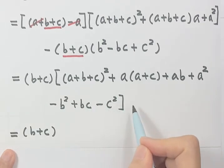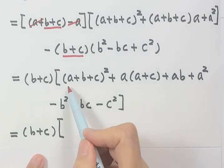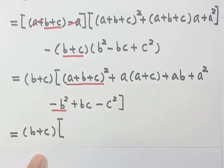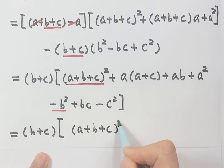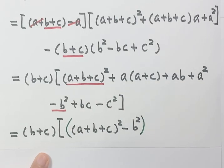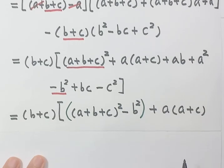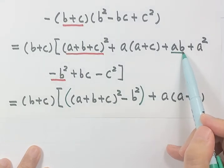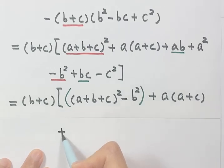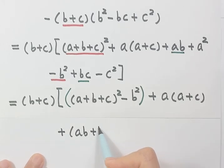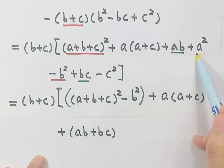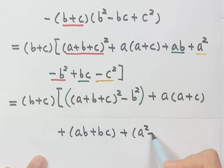So next we're going to combine and reorganize this inside. First, combine this one and minus b squared together. So write down a plus b plus c squared, then minus b squared. Then write down plus a times a plus c. Next combine these two together — plus ab plus bc. Then put a squared and minus c squared together, giving a squared minus c squared.